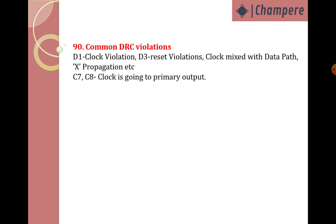Common DRC violations in ATPG: D1 clock violation, D3 reset violation, clock mixed with data pin. Also C7/C8 — clock going to primary output. Other violations include per-test clock file violations and T3/T5 tracing violations. These are the main violations you will commonly encounter.